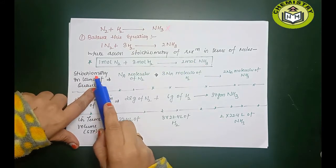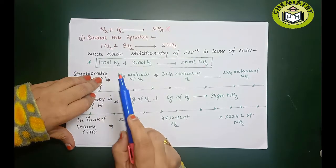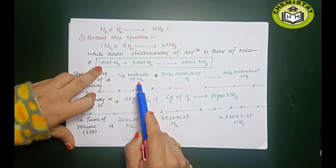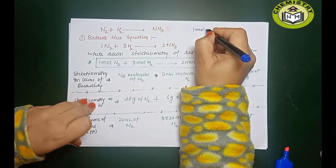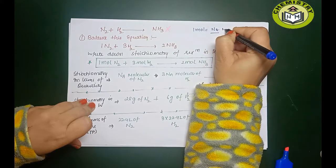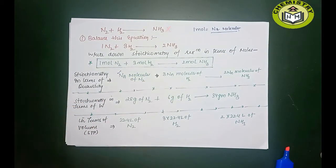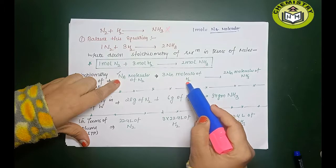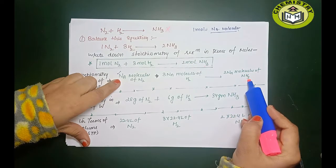Stoichiometry in terms of quantity — in terms of number of particles, molecules: 1 mol of nitrogen has Nₐ molecules of nitrogen. For 3 mols of hydrogen, that is 3Nₐ molecules of hydrogen. For 2 mols of ammonia, that is 2Nₐ molecules of ammonia. You've done this before — 1 mol equals Nₐ particles.